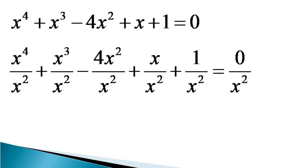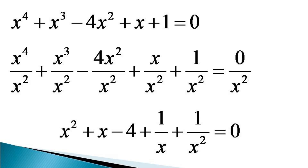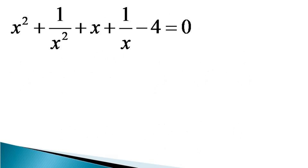After dividing the equation by x squared, we get an equivalent equation as x squared plus x minus 4 plus 1/x plus 1/x squared equals 0. By adjusting the terms of this equation, we get the equivalent equation as x squared plus 1/x squared plus x plus 1/x minus 4 equals 0.